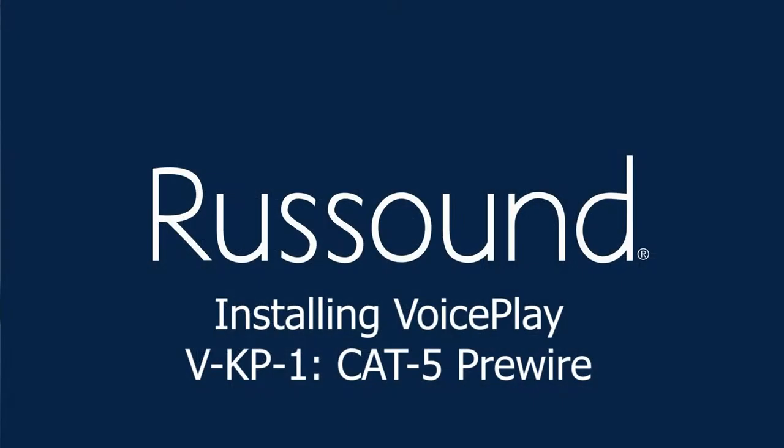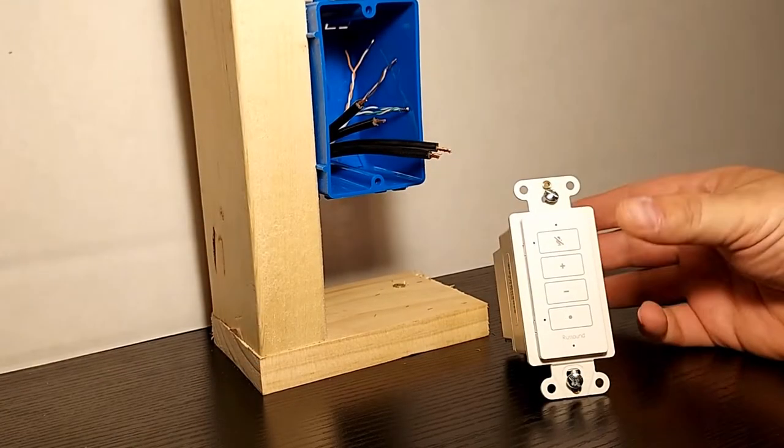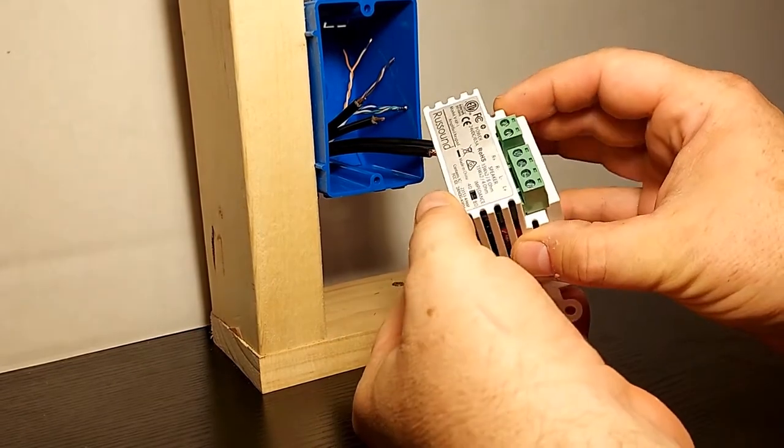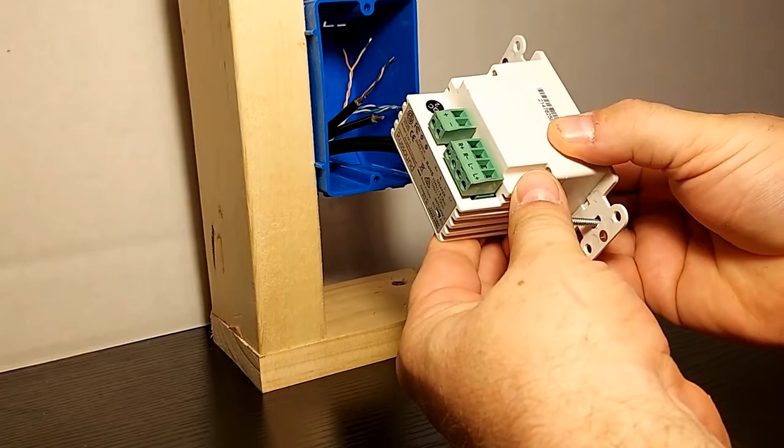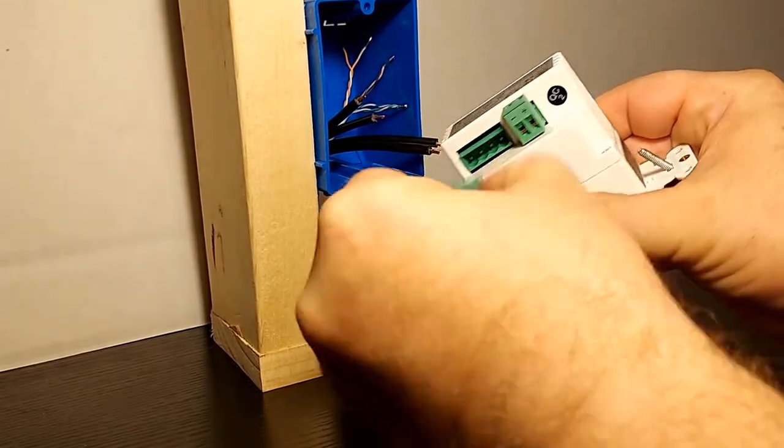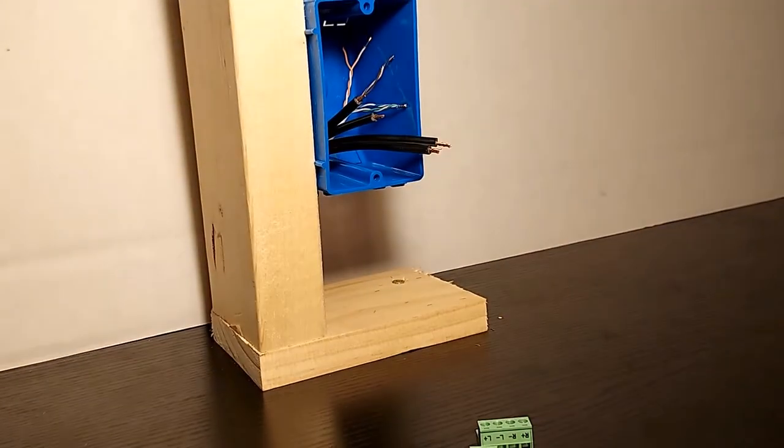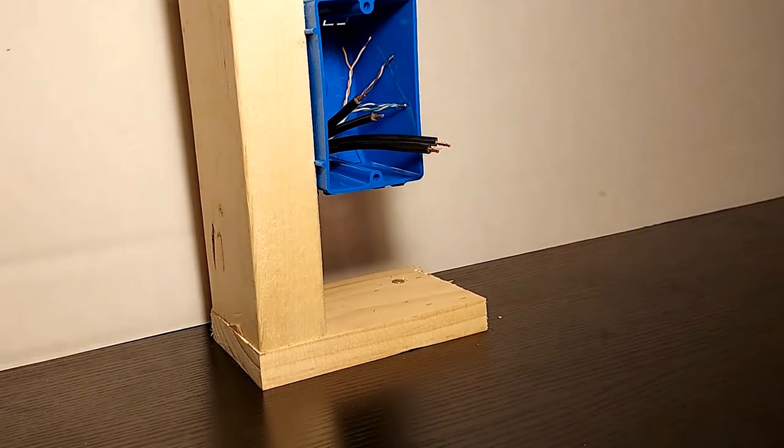So in the first example we're going to look at a situation where we have a category 5 cable that's already been pulled to the keypad. So here you'll see that we have our keypad and if we roll it over you'll see that there are some Phoenix terminal strips on the back. These are removable and they're also labeled for polarity and speaker. We can attach our wires to these simply using a small flathead screwdriver.